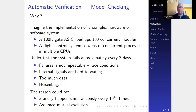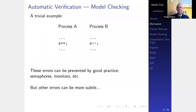So how do you actually check for that? You can't really reboot your system every three days. Let's have a trivial example. You have process A which increments a variable, and process B which decrements variable x — it could happen at the same time. These errors can be prevented by good practice, semaphores, monitors, etc. Except that it doesn't always work, and these errors show up in very subtle ways.